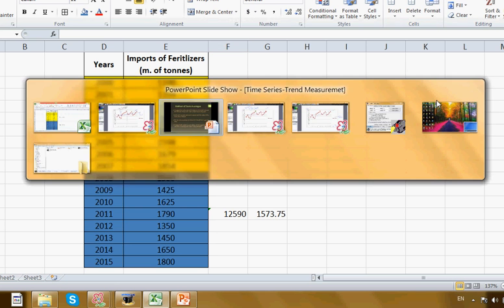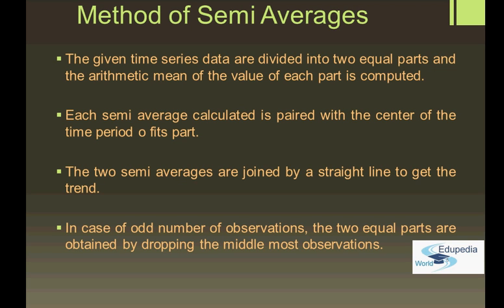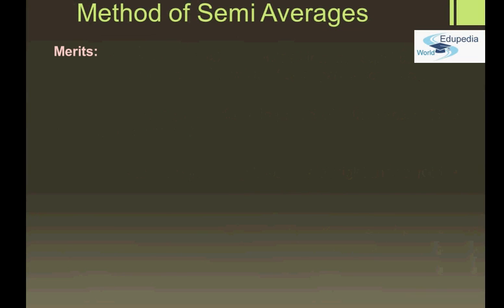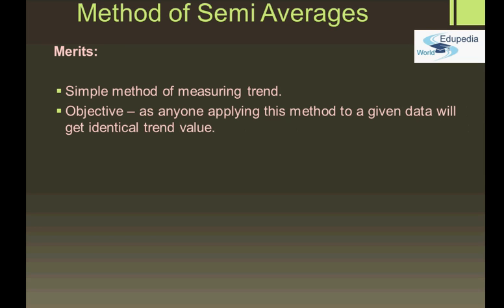In case of an odd number of observations, we still divide the data into two equal parts by dropping the middlemost observation. For example, if we have nine values, we take the first four and the last four, leaving out the fifth data point, so we get an equal number of data in two equal parts to obtain the two semi-averages. These two semi-averages are then joined by a straight line to get the trend. The merits are that it is very simple with minimal mathematical calculation, and it is objective — anyone applying this method to a given set of data will get identical trend values.